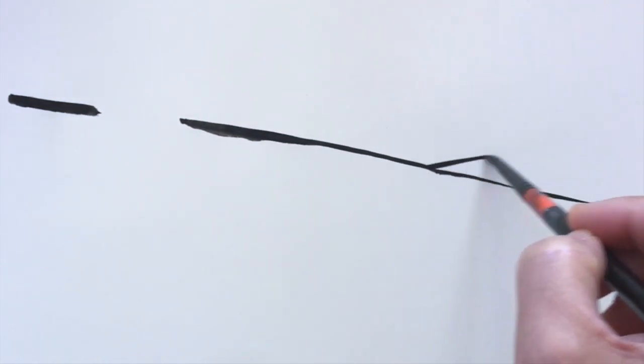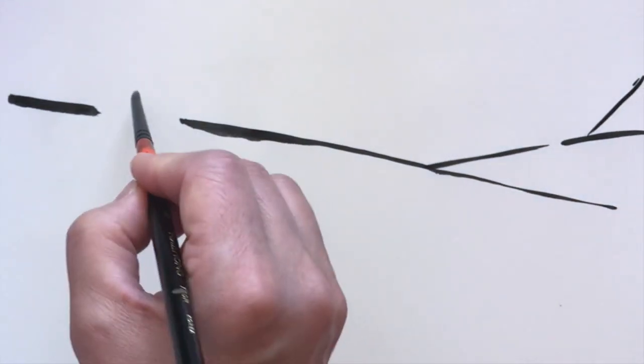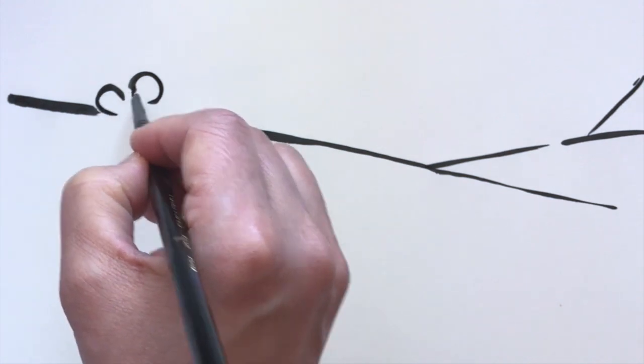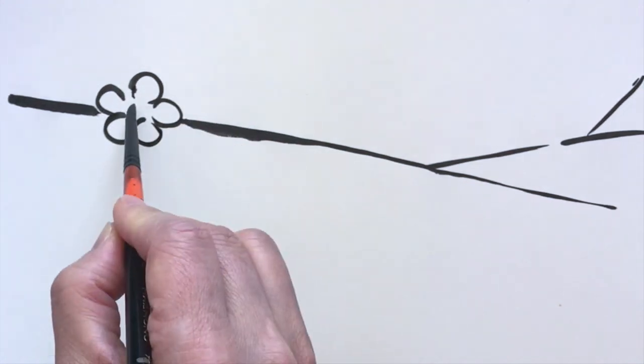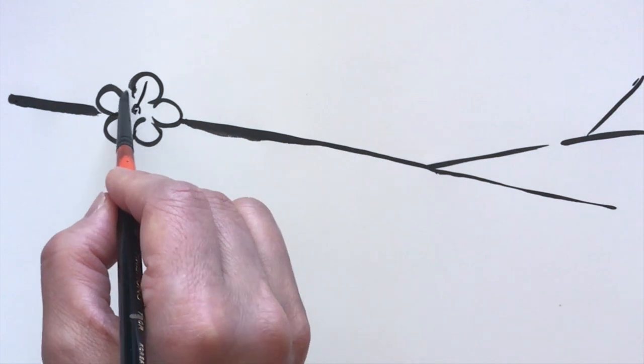Now, we're ready to practice drawing branches with flowers. So, as you can see, this is why we put the spaces in there, so we can add different flowers.